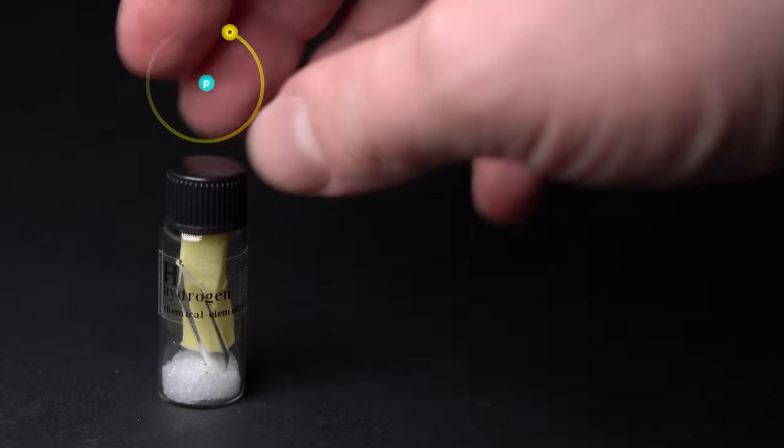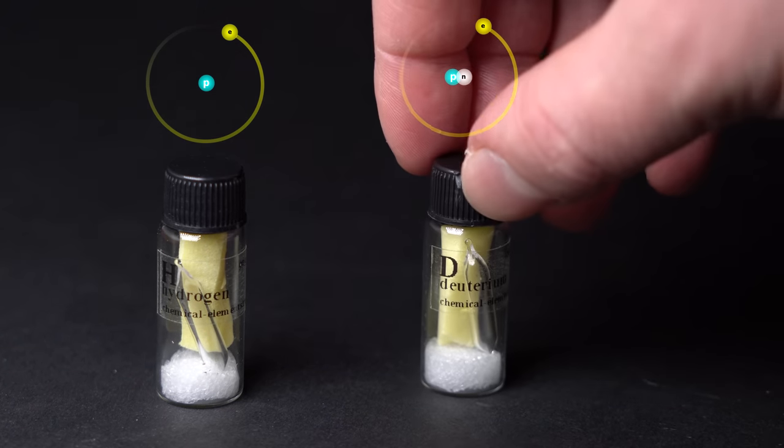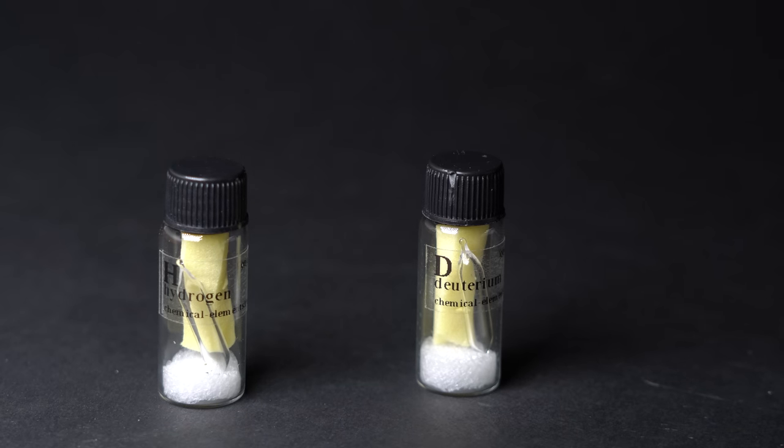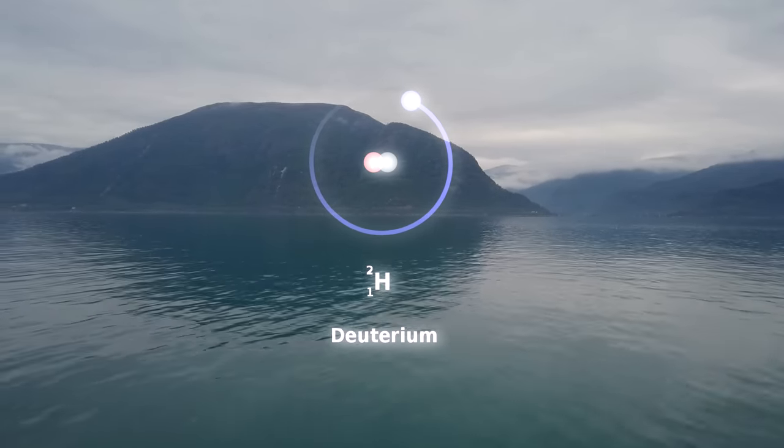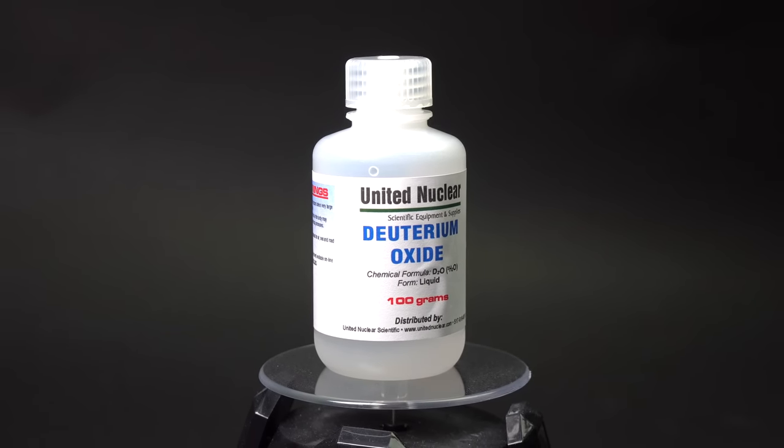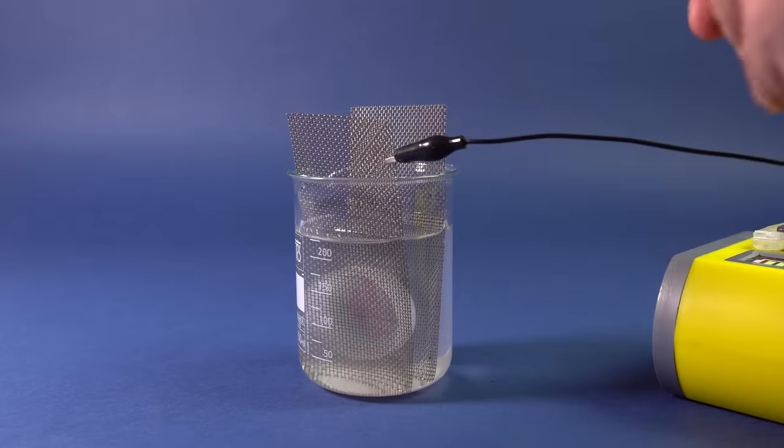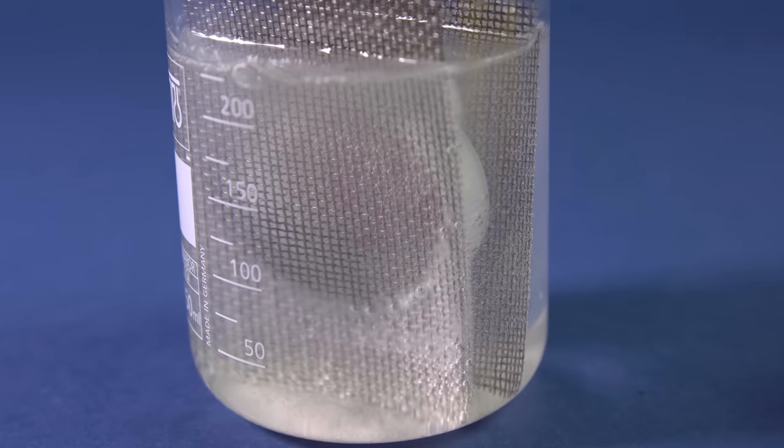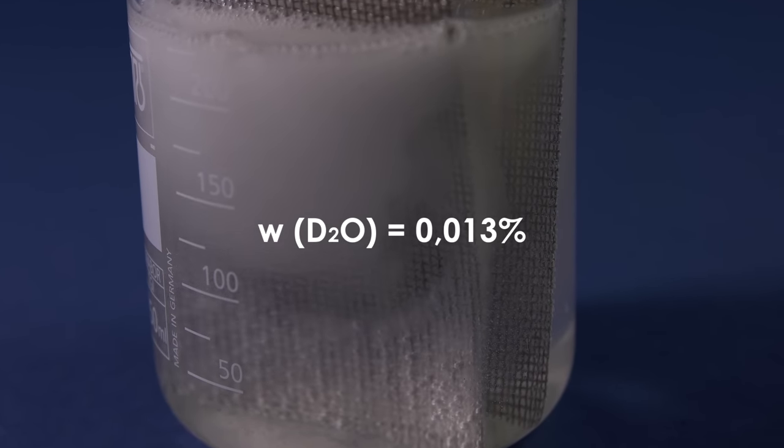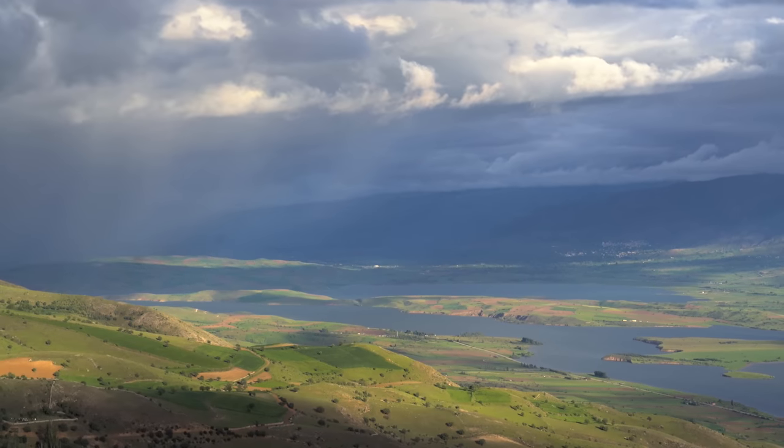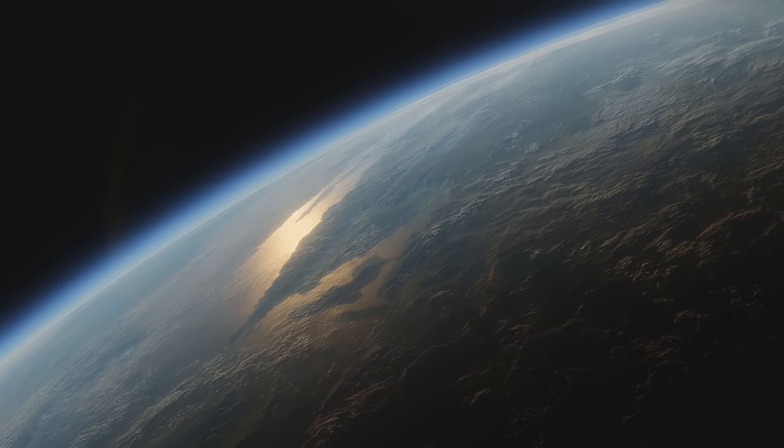However, besides the lightest element with just one proton in its core, there also exists an extremely rare isotope of it called deuterium. Besides having one proton, its core also has one neutron. In nature, deuterium compounds are 10,000 times rarer than hydrogen compounds. That's why deuterium oxide, or so-called heavy water, is one million times more expensive than regular water. Heavy water is mostly obtained using electrolysis of regular water, which contains a small amount of heavy water, or to be precise, 13,000th of a percent. Unfortunately, pure deuterium, just like hydrogen, doesn't occur naturally because of its ability to disperse from the atmosphere into outer space.